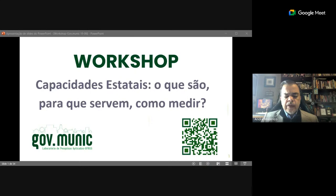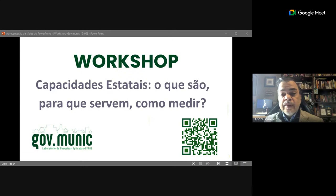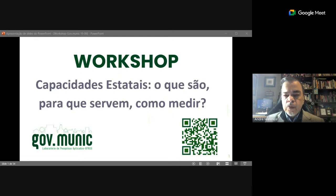É a primeira atividade do gov.munic, Laboratório de Pesquisas Aplicadas. O gov.munic foi criado a partir de um projeto aprovado nos marcos do edital Humanidades do CNPq, e pretende analisar capacidades estatais dos municípios, os efeitos sobre a legislação, políticas e indicadores de desenvolvimento sustentável. É também vinculado à rede Qualigov, que reúne pesquisadores nacionais e internacionais em torno a uma agenda de qualidade de governo e políticas de desenvolvimento sustentável, e também ao núcleo de pesquisa e documentação da política, o NUPERGS, da UFRGS.